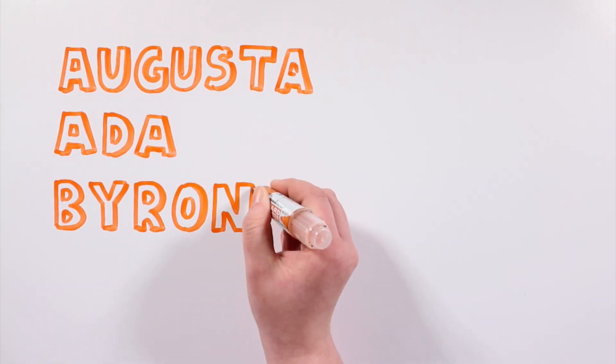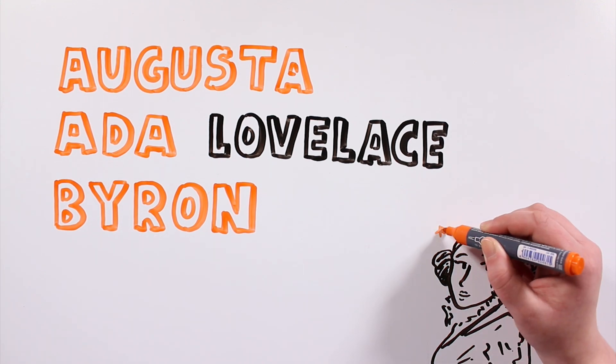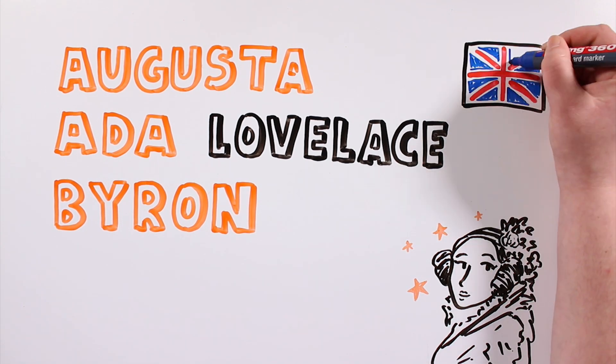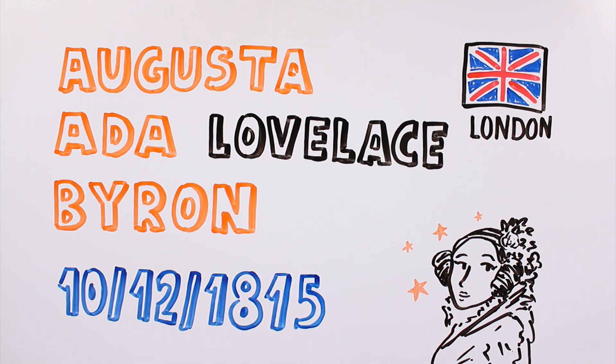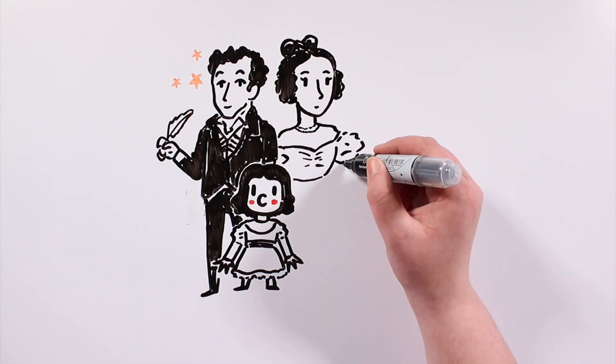Augusta Ada Byron, known as Ada Lovelace, was a talented English mathematician and a pioneer in the field of computer programming. She was born in London on December 10, 1815,